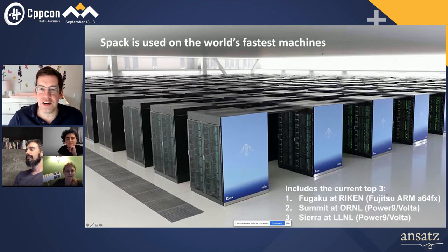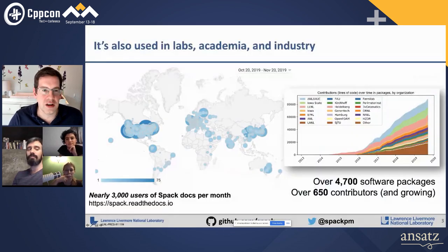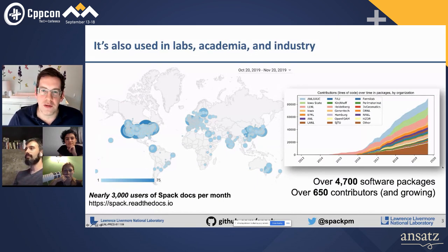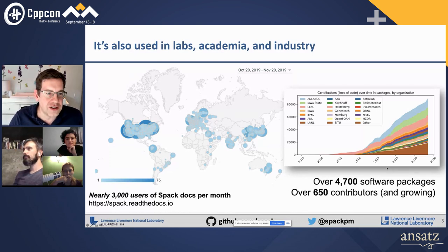Spack is used on a lot of HPC machines. This is Fugaku — it's a big ARM A64FX machine in Japan and it's number one right now. We're used on a whole lot of supercomputers, including some smaller sites around the world. We have a pretty booming community with contributions from different organizations and almost 5,000 packages now.